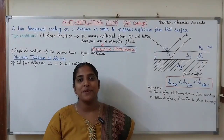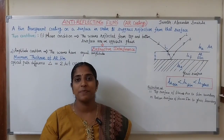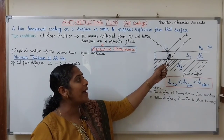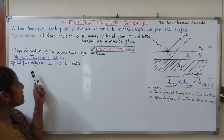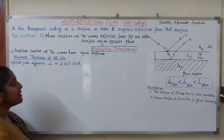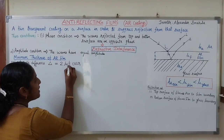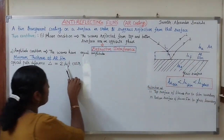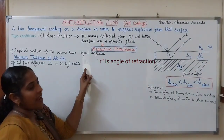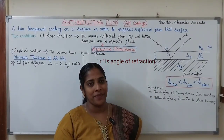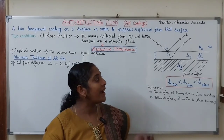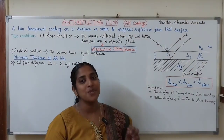Using the phase condition, we can derive an expression for the thickness required for the AR film. From the previous videos on interference in thin films, the optical path difference between light reflected from the top and bottom surface of the film is: Δ = 2μT cos R, where μ is the refractive index of the film (μF), T is the thickness of the film, and R is the angle of refraction. We now check whether any phase change occurs at the top and bottom surfaces due to Stokes' law.